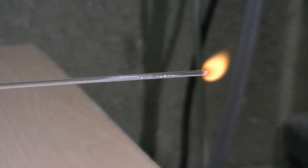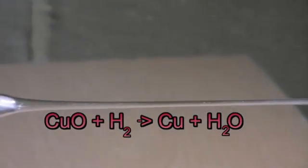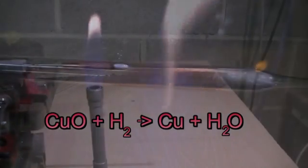What you will see after a short time is water starting to condensate on the end of the tube. This is of course the reaction product from the hydrogen reduction of the copper oxide being water.